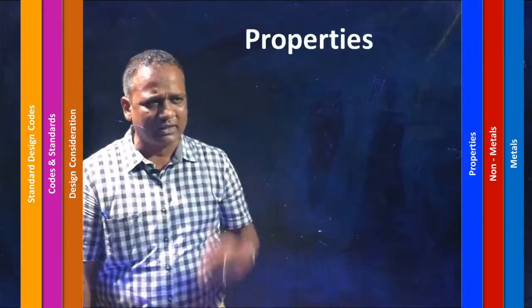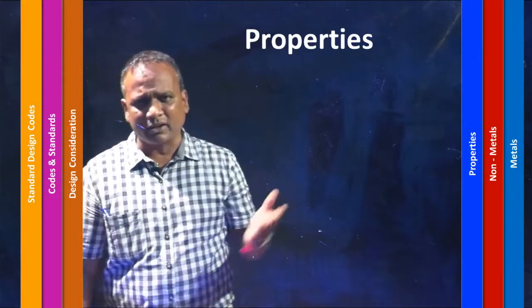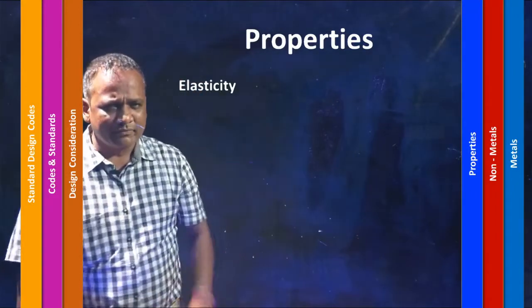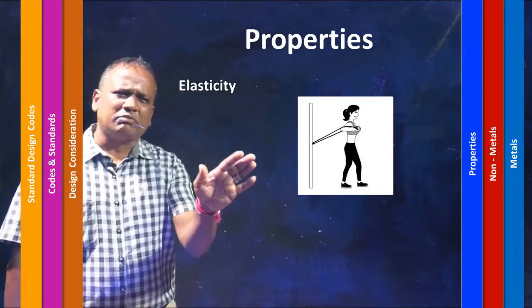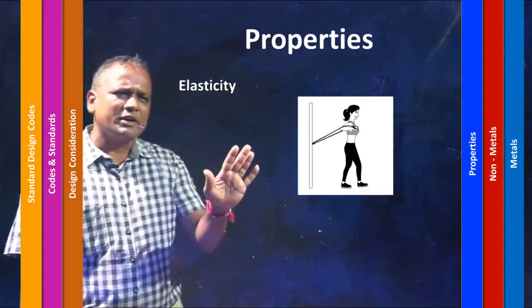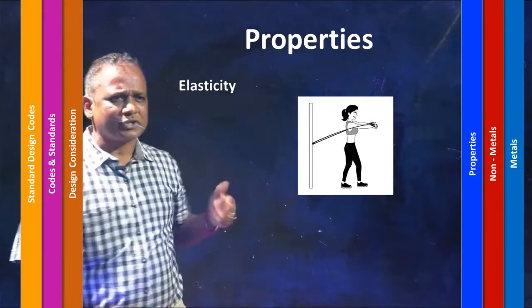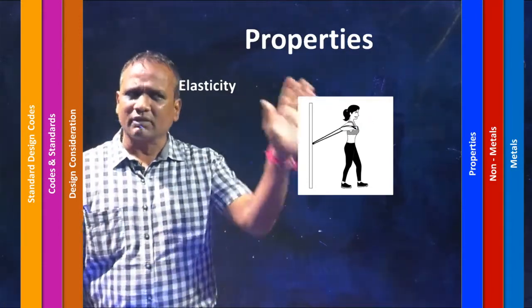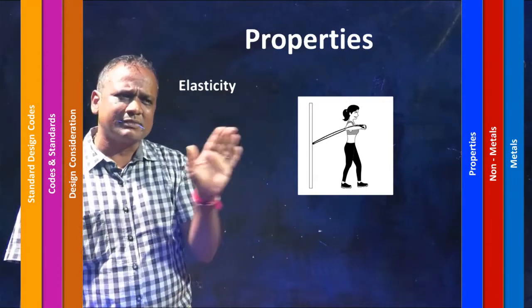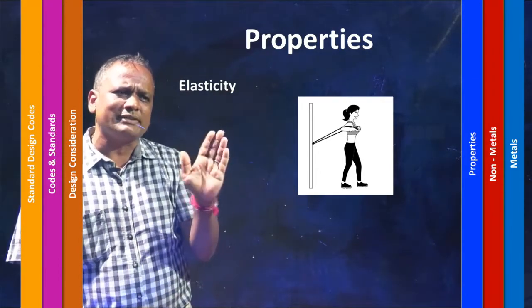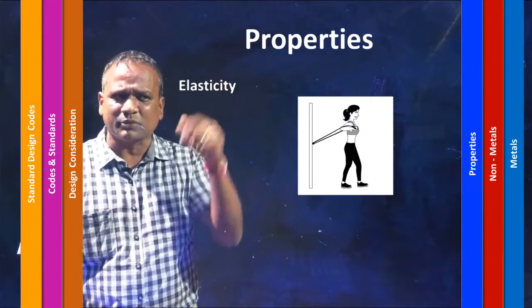Next are properties to consider when choosing a material for designing a machine element. One would be elasticity — whenever you deform or put a load on it and then remove the load, it returns back to its original position. That is elasticity.